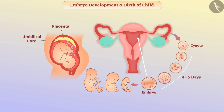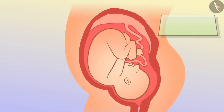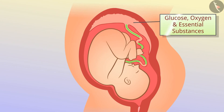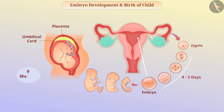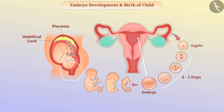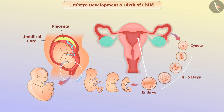With the help of the umbilical cord, the placenta supplies glucose, oxygen, and essential substances to the fetus, and similarly removes carbon dioxide and other excretory products produced by the fetus. In about 9 months after pregnancy, the fetus is fully developed and ready for delivery. During delivery, rhythmic contraction of the uterine muscles leads to the birth of an infant.